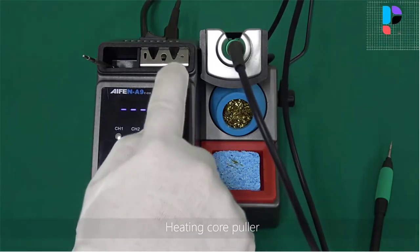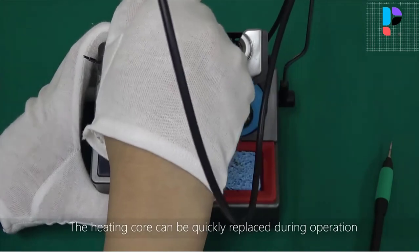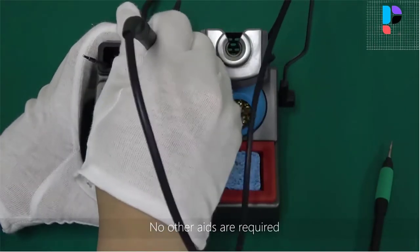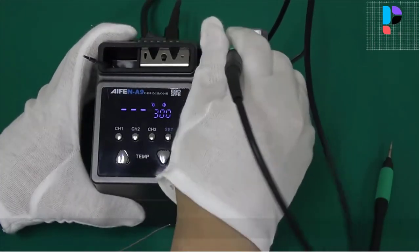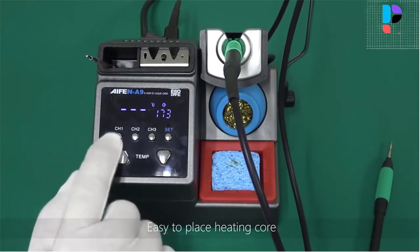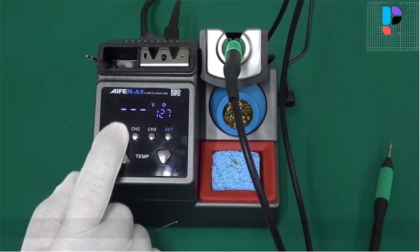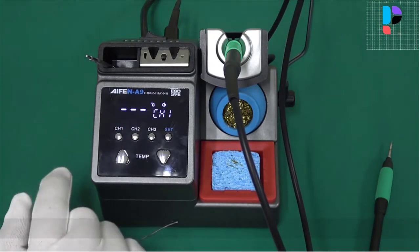Automatic sleep function. The handle is placed on the stand, it will enter the sleep state immediately, and it will heat up immediately when it is lifted. The temperature compensation function automatically compensates the temperature of the soldering iron tip during the welding process, so that the soldering iron tip is always kept at the set temperature.